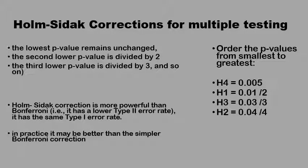A second way for correcting the p-value in multiple testing is to use the Holm-Šídák technique, which uses a different approach. Say you are repeating the test on the same output variable four times. You obtain four different p-values and rank them in ascending order, starting from the smallest. In this example, the smallest is 0.005 and the largest is 0.04. In the Bonferroni technique, you would divide all p-values individually by four. But in the Holm-Šídák technique, you use a different approach.